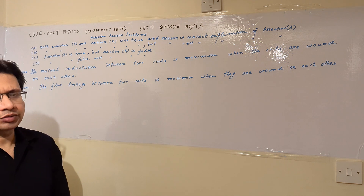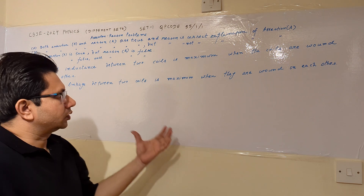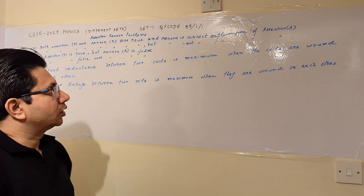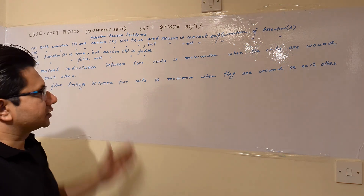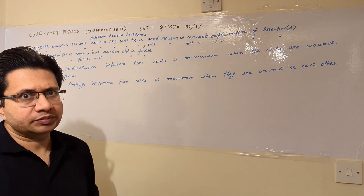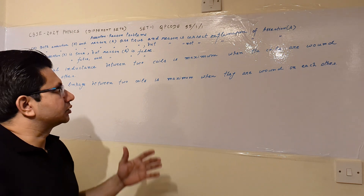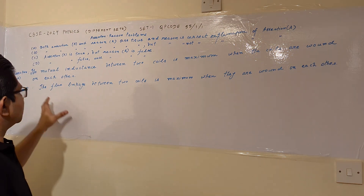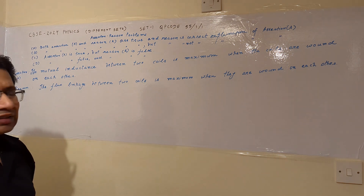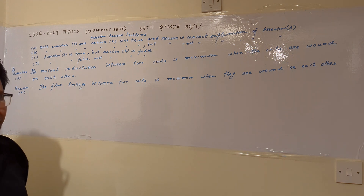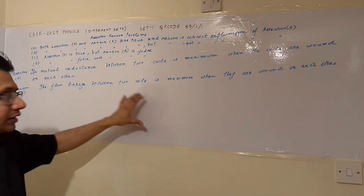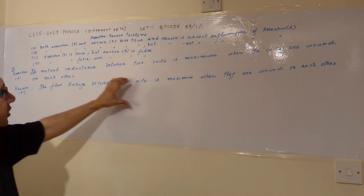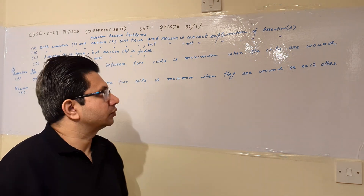This problem is based on the concept of induction. When one coil is wound on another, the mutual inductance is related to the flux linkages — the greater the flux linkages, the greater the mutual inductance. The flux linkages are maximum when the coils are wound on each other, so both the assertion and reason are correct.